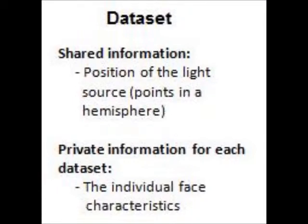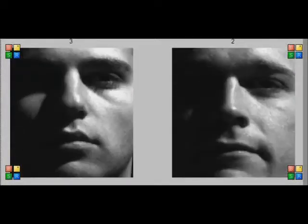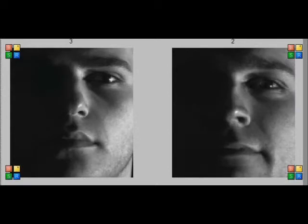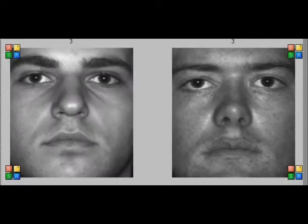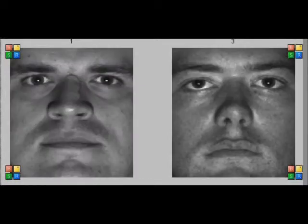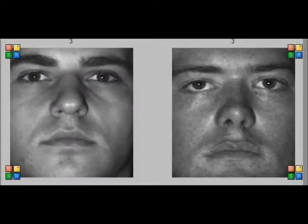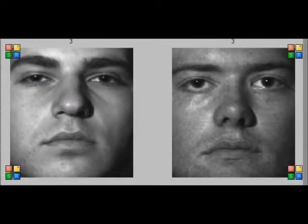Let's see an example. We created a dataset where each modality contains images of three different faces under different illumination conditions. The images are aligned so that the shared information is the position of the light source and the private information of each modality is the individual face characteristics.